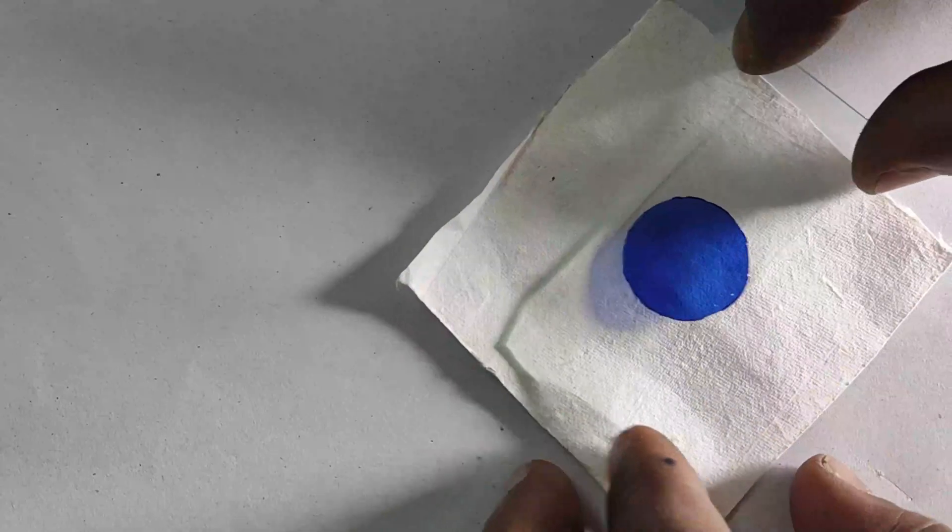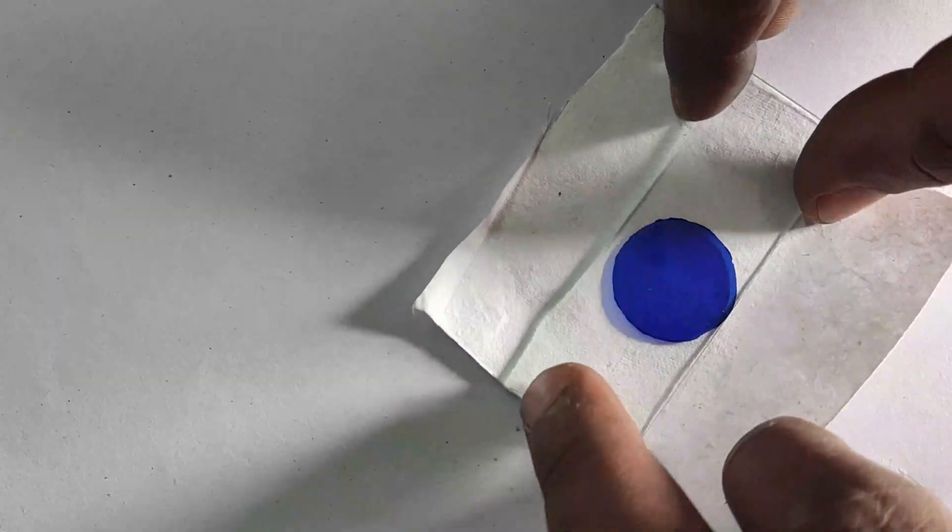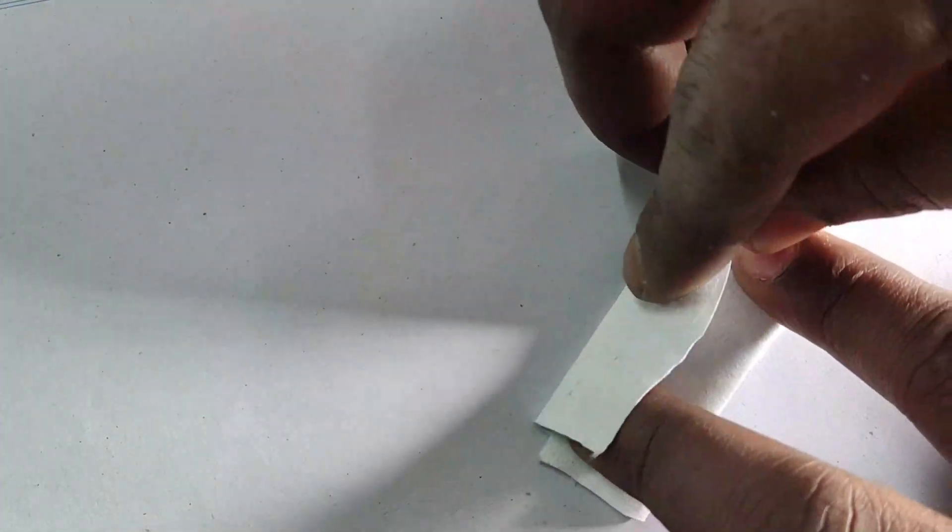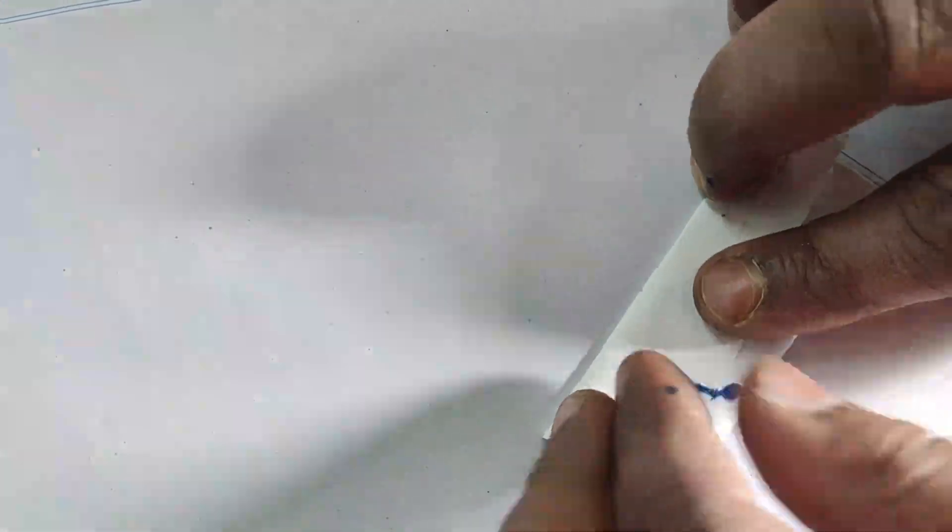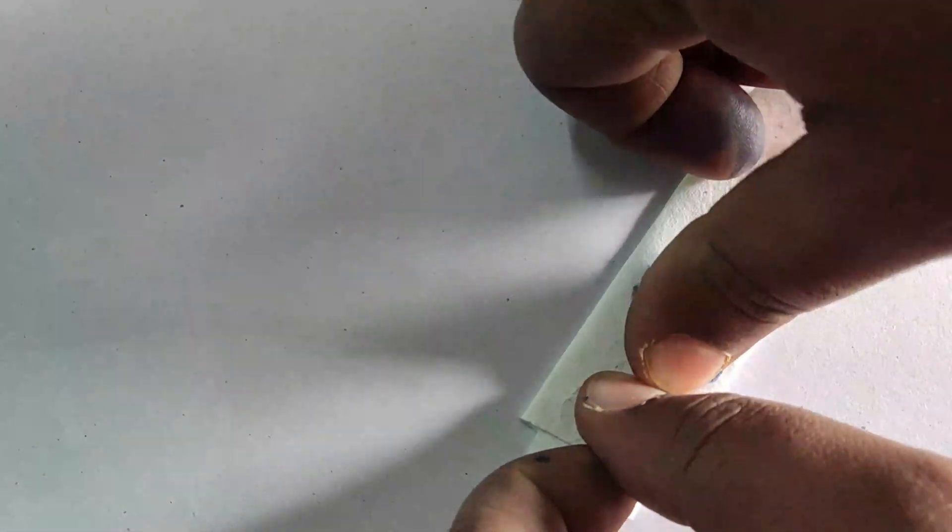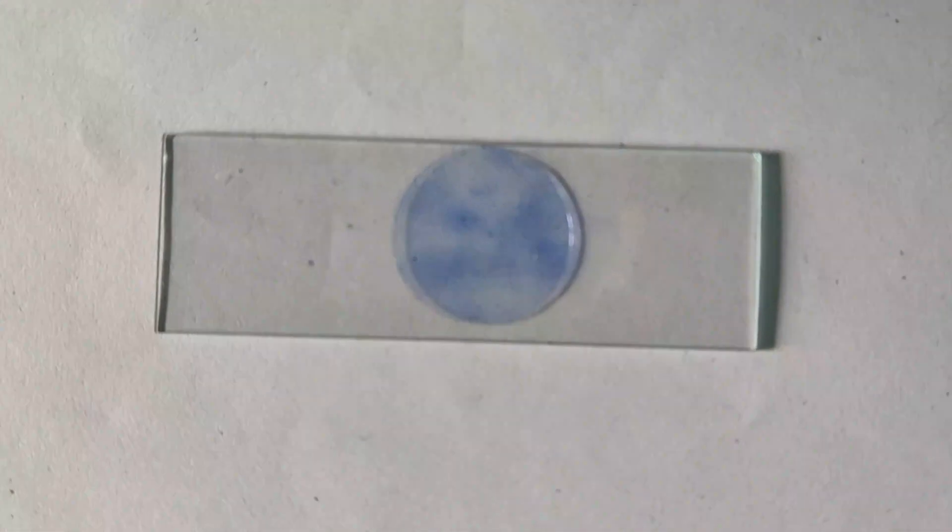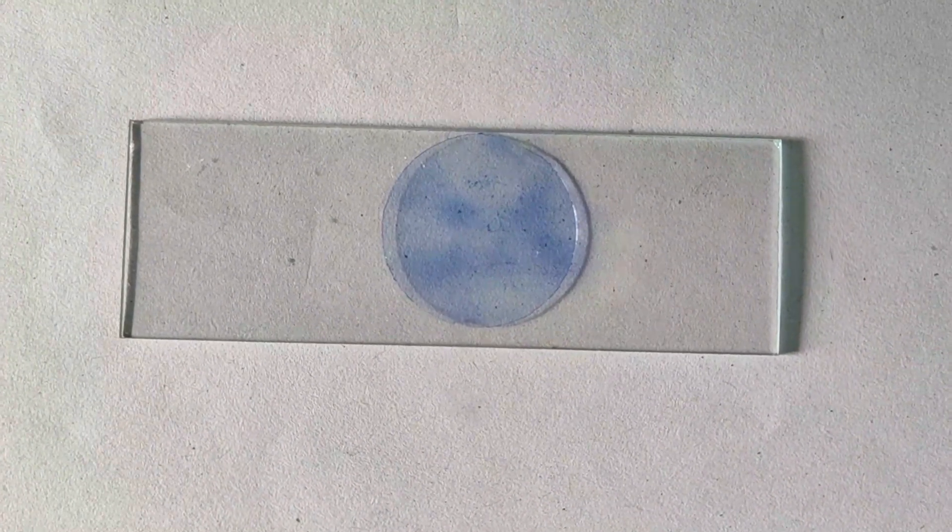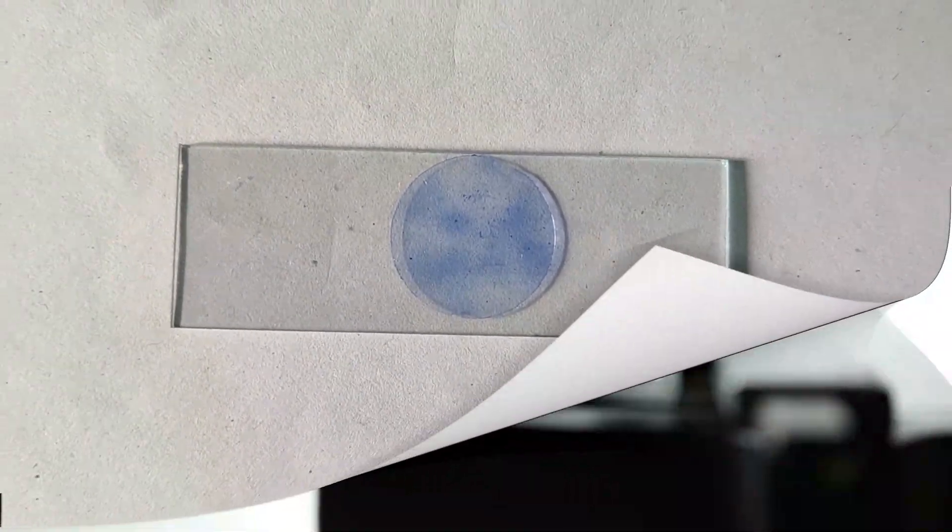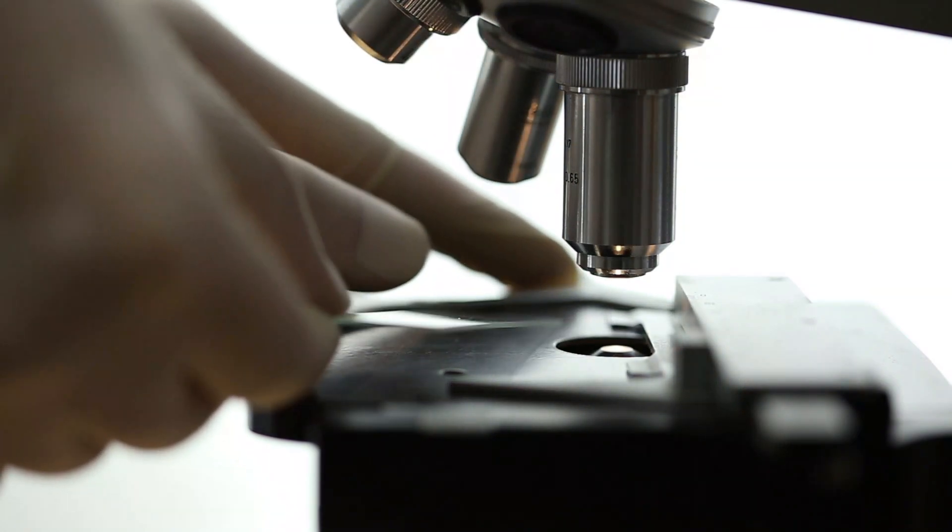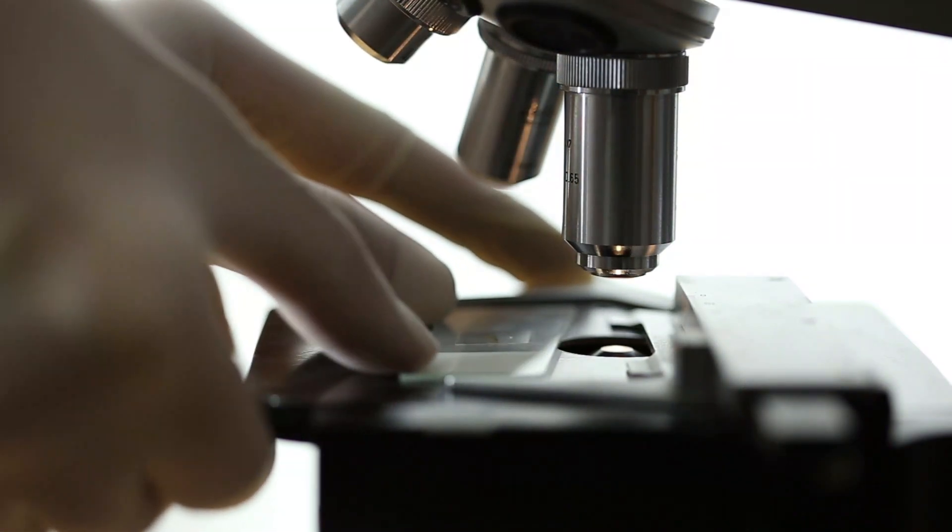After that we will discard the extra stain by using absorbent paper. First we will observe it under the low power microscope.